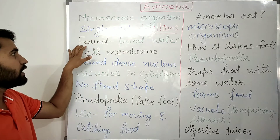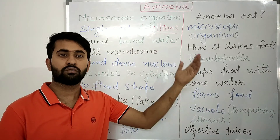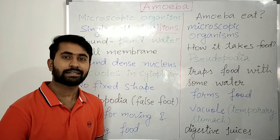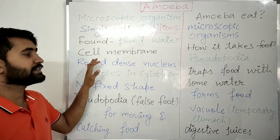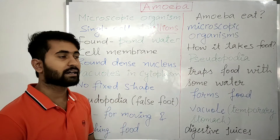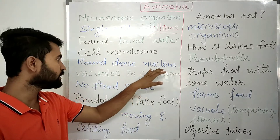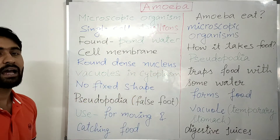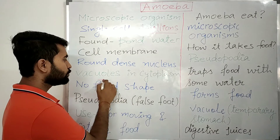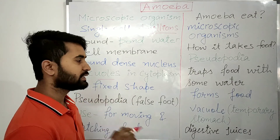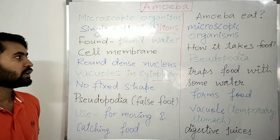Amoeba is found in pond water or ditches. It has a cell membrane, a round dense nucleus, and bubble-like vacuoles that are present in the cytoplasm.